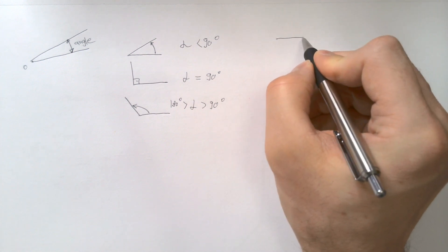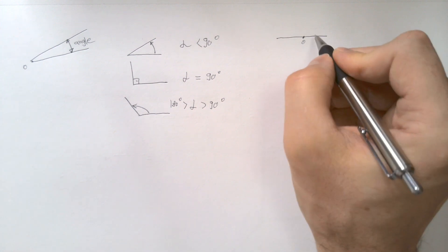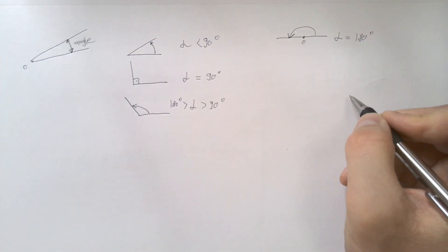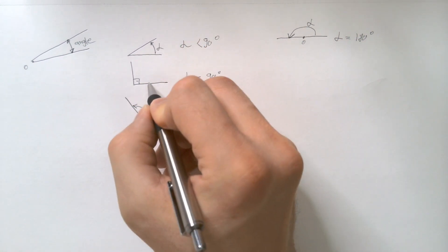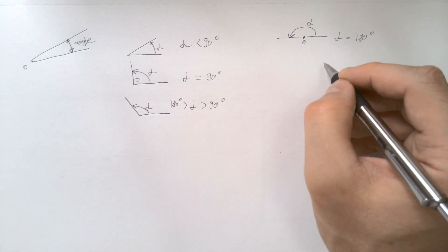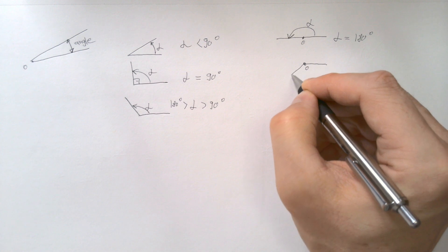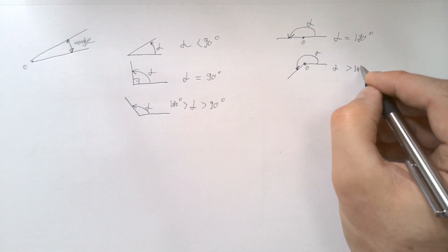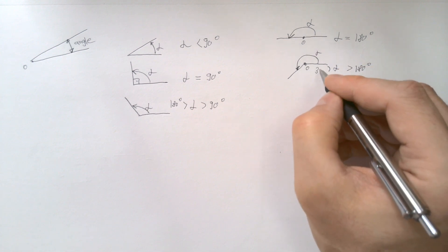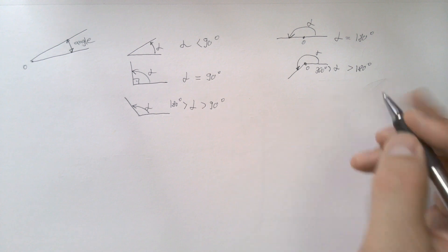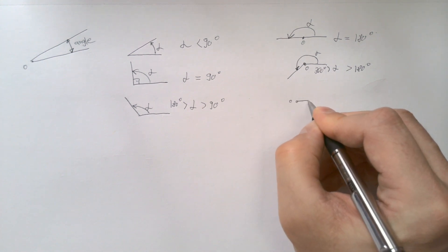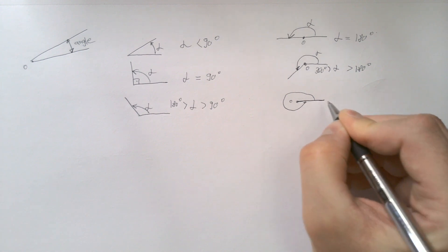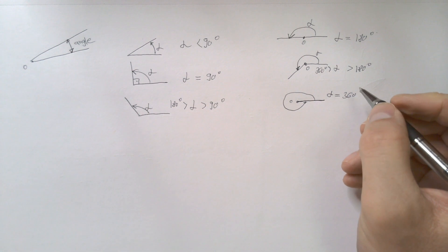Consequently, the angle from this origin O can be what we call a straight angle, and that's when alpha is equal to 180 degrees. And finally, we have the reflex angle, when alpha is larger than 180 degrees but smaller than 360 degrees. And at the end, of course, we have the so-called full angle. If this is the original ray and alpha is all the way around so you end up with the same ray, alpha is 360 degrees for the so-called full angle.